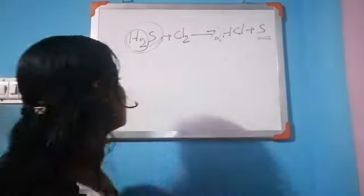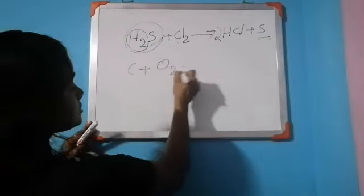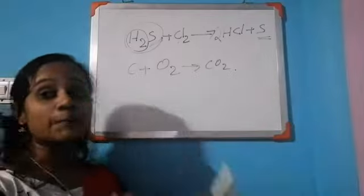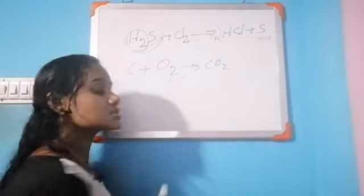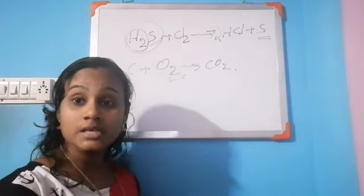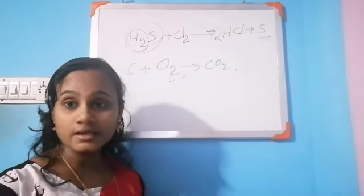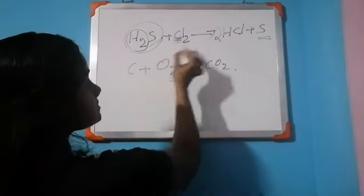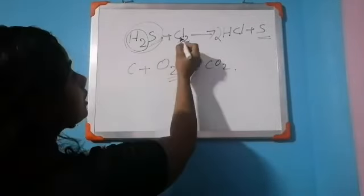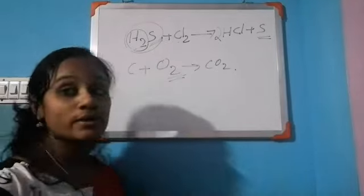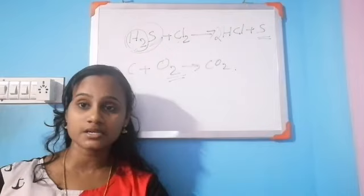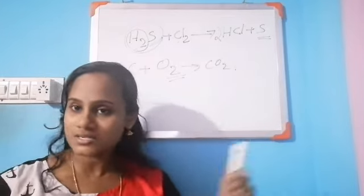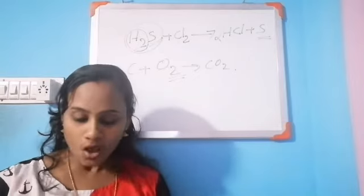Here carbon combined with oxygen to form carbon dioxide — that is oxidation. Here which substance supplies oxygen? Oxygen supplies oxygen, so oxygen is an oxidizing agent. In H2S plus Cl2, chlorine removes hydrogen, so chlorine is an oxidizing agent.